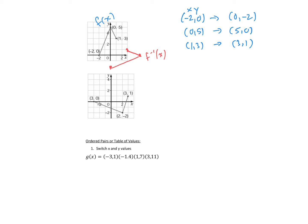How is that a reflection in y equals x? Well, y equals x is the line where x and y have the same coordinates: 0,0; 1,1; 2,2; 3,3; negative 1, negative 1, and so on. This is the reflection line. So the definition of an inverse function is the reflection of the function in the line y equals x.